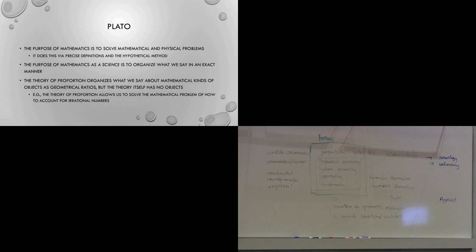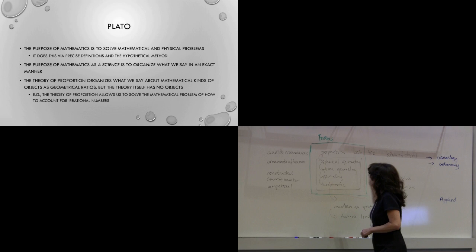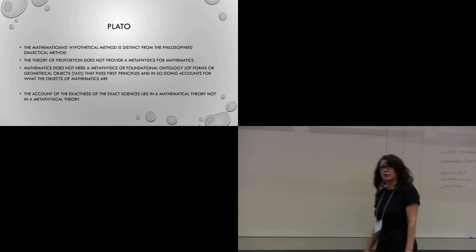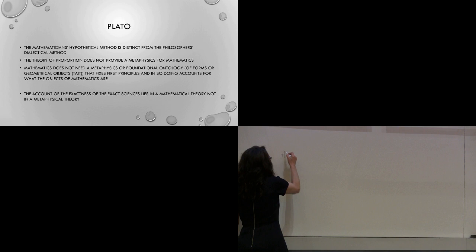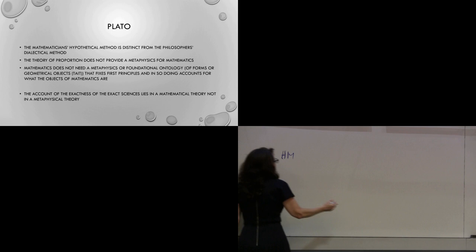Remember how I began: for Plato, it's the precision of definitions and the stability of method that allows us to talk about the exactness of mathematics. The other thing Plato says is that the philosopher's method is distinct from the mathematician's method. The mathematician uses the hypothetical method, and the philosopher is supposed to use the dialectical method.